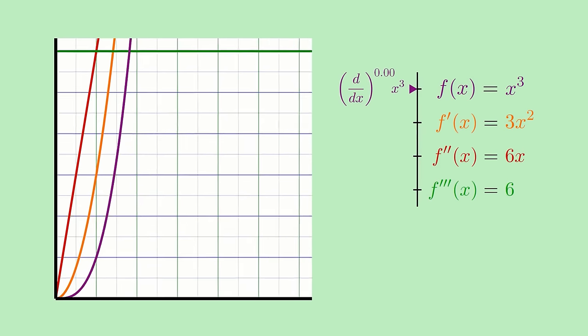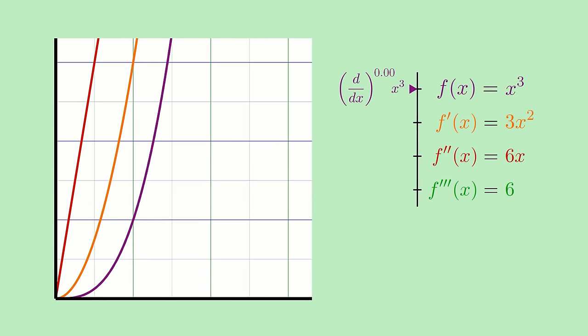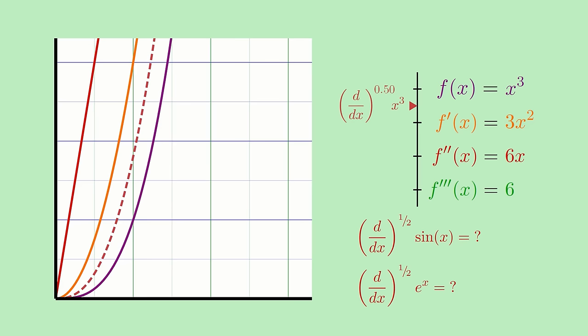So likewise, since these polynomials came about from taking derivatives, could there be a way to construct a kind of fractional derivative that interpolates the ordinary derivatives? Is it possible to take, say, a half-derivative of x cubed? Or sin of x? Or e to the x? Does such a concept even make sense?